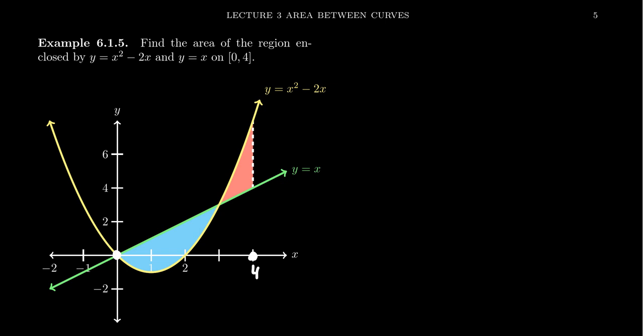In this situation, the bounds are given to us specifically zero to four, but somewhere in the middle, the two functions cross each other and actually the bigger function gets swapped. The green function is on top first from zero to this intersection, the parabola is below it, and then they switch roles.